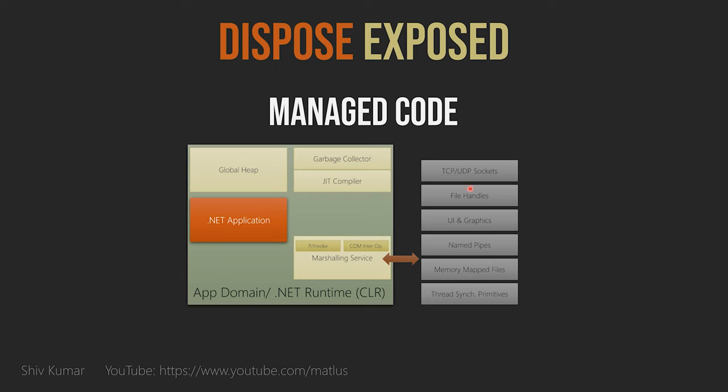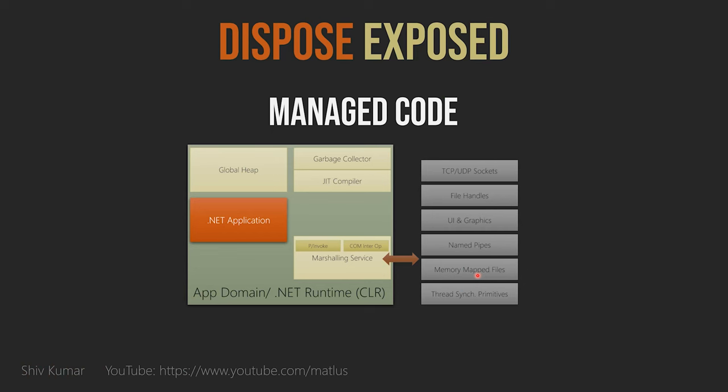All these things — sockets, file handles, pipe handles, graphics handles — are within the OS's realm and not within your managed GC realm. The GC has no clue they were allocated. It becomes your responsibility. When I use a class for the first time, the first thing I check is: is it disposable? If that class has a method returning something new, I check if that's disposable too.